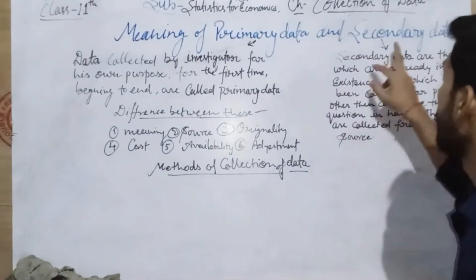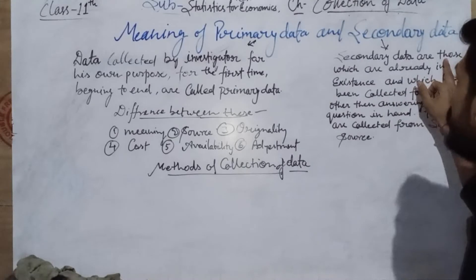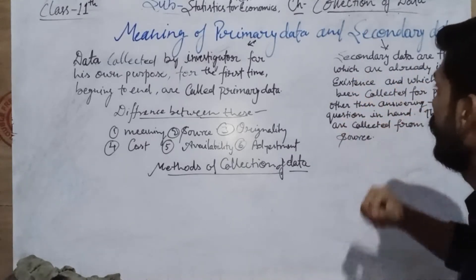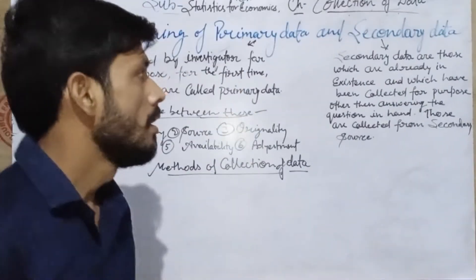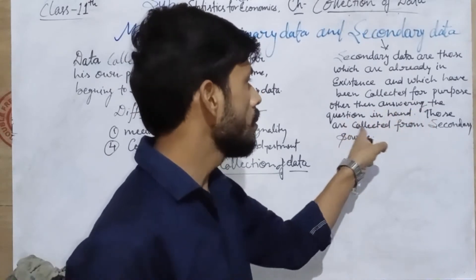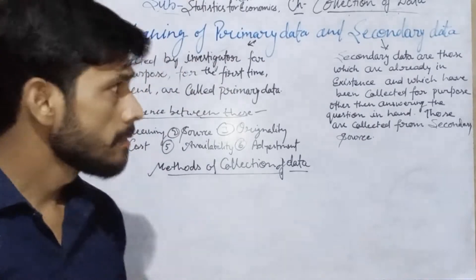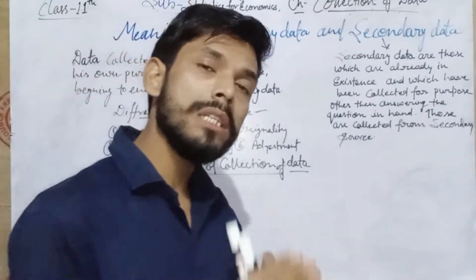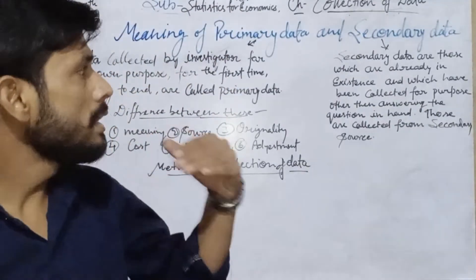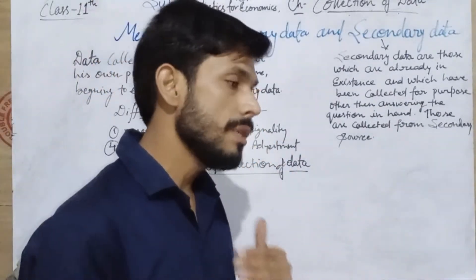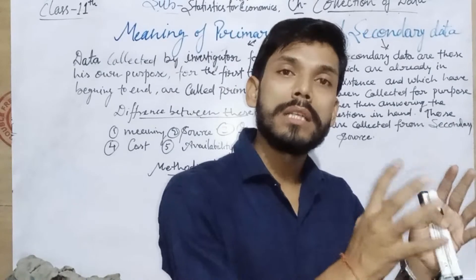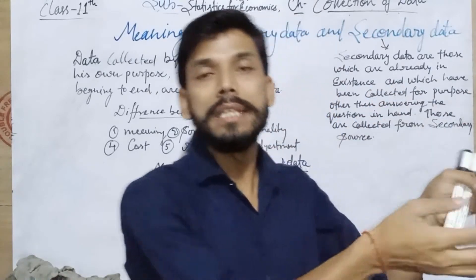Secondary data are those which are already in existence and which have been collected for a purpose other than answering the question in hand. Those are collected from secondary sources. Secondary data is the data which is already collected by another person and it is already in existence.